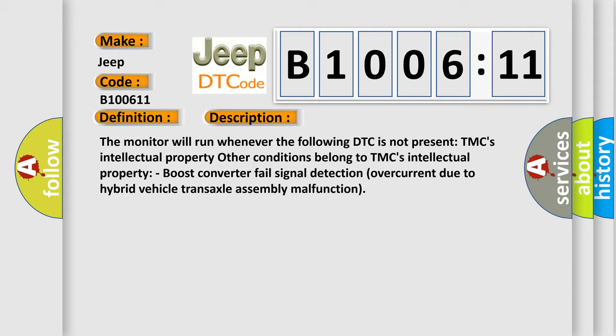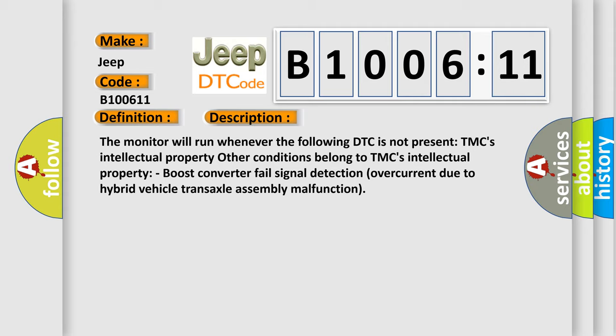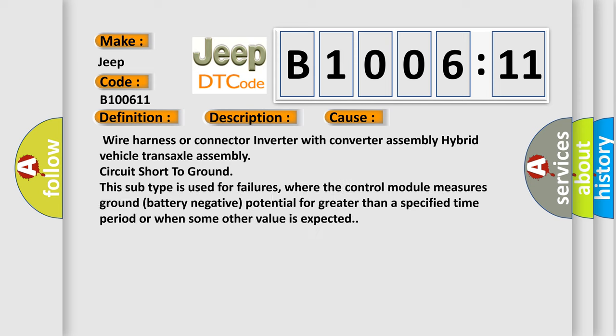This diagnostic error occurs most often in these cases: wire harness or connector inverter with converter assembly, hybrid vehicle transaxle assembly circuit short to ground. This subtype is used for failures where the control module measures ground battery negative potential for greater than a specified time period, or when some other value is expected.